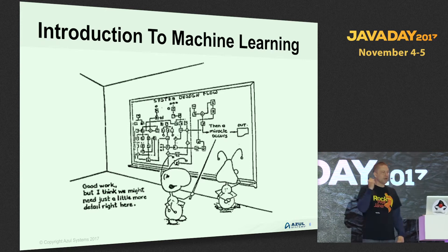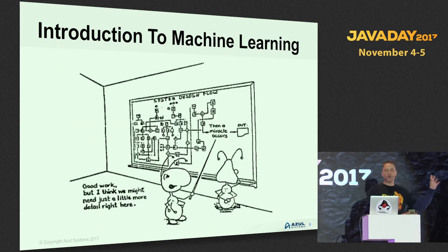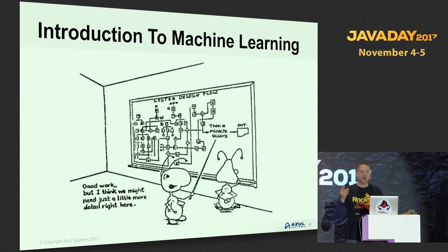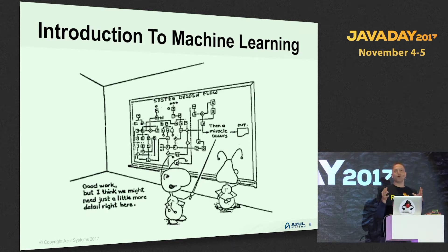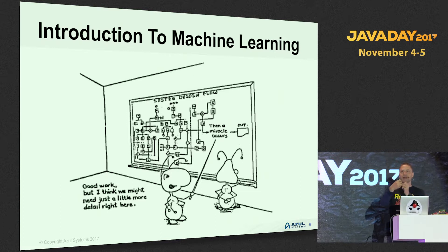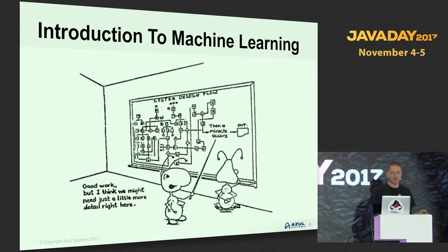Introduction to machine learning. There's this image that's been around for a long time — you may not be able to read what it says at the bottom, but it says 'good work, but I think we might need a little more detail right here,' and in the box it says 'then a miracle happens.' That's kind of what machine learning is like: you've got input data, then a miracle happens somewhere in the software, and out comes an answer. But how do you actually get that answer from the inside? That's the tricky bit.